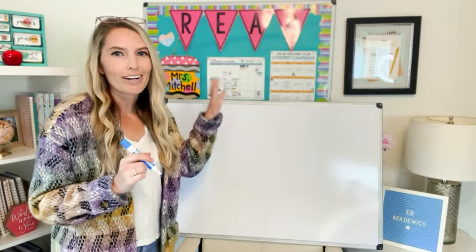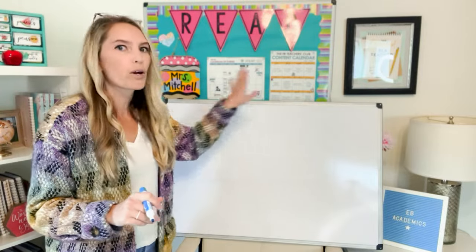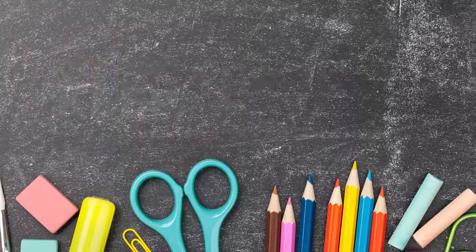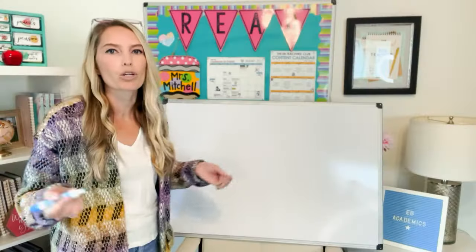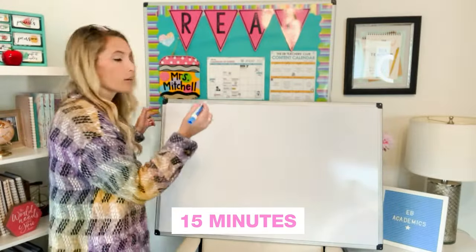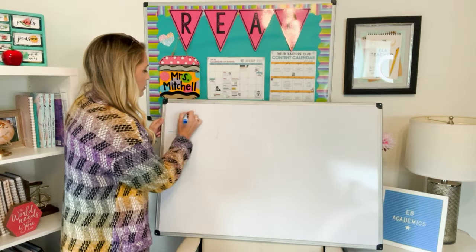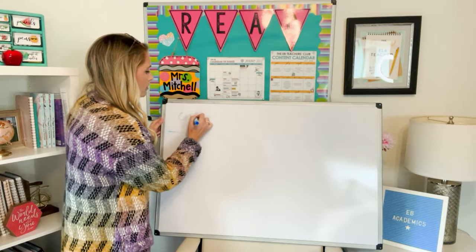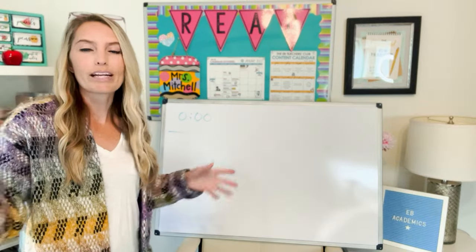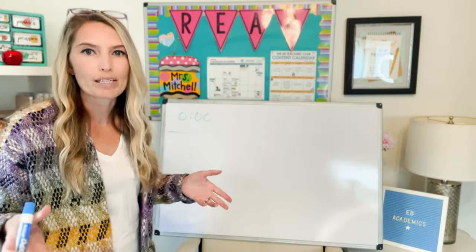With your expo marker and your whiteboard, this is all you're going to do. Somewhere on your whiteboard, you're going to designate a place where you keep track of your students' time working toward 15 minutes. I usually put just a little corner with zero — they have zero seconds right now at the beginning of the school year, whenever you start to implement this with your students.